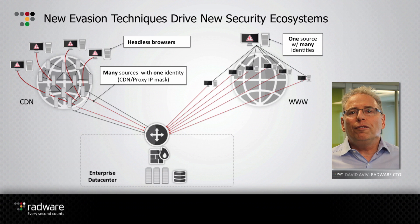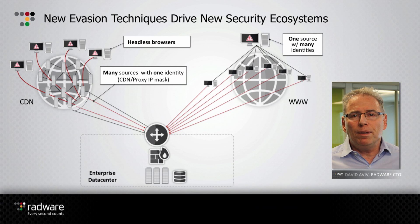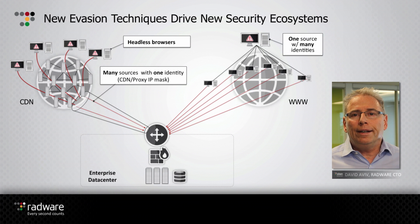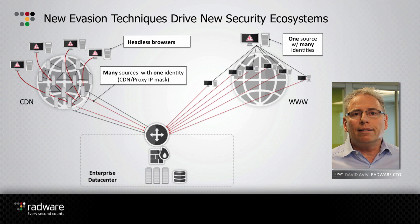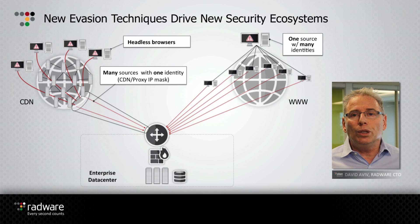As volumetric attacks morph and change the landscape of scrubbing, we do see new evasion techniques targeting customers. These new evasion techniques can be seen in the slide: on the left-hand side, a CDN is used as a proxy, funneling information to the customer. New headless browsers that utilize the CDN make it impossible to identify the endpoint IP address. On the right-hand side, one attacker uses many rotating IP addresses that hit the customer.